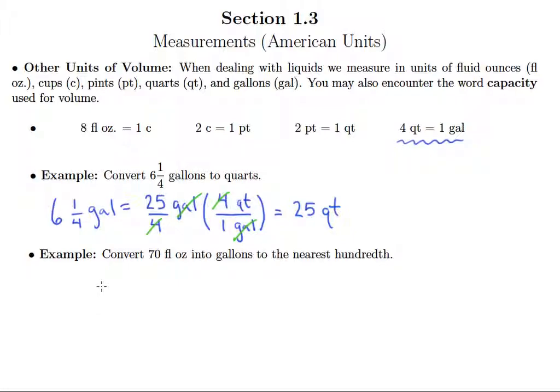So now we want to convert 70 fluid ounces into gallons to the nearest hundredth. So we want it in gallons to the nearest hundredth. So we have 70 fluid ounces. I know ounces is kind of a weird one. It's abbreviated OZ, but there's no Z in the word ounces, but that is correct to have the Z in the abbreviation.